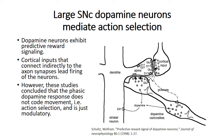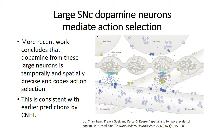The predictive reward signaling researchers asserted that the phasic dopamine response does not code movement, but predictive reward signaling necessarily occurs after movement has happened, not before. As such, it was not clear that the conclusion that the phasic dopamine response does not code movement was valid based on this earlier research, and more recent research has shown that conclusion is in fact not accurate. The more recent research has shown that dopamine from these large neurons is temporally and spatially precise and codes action selection.